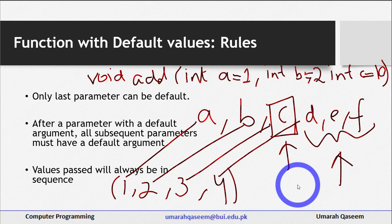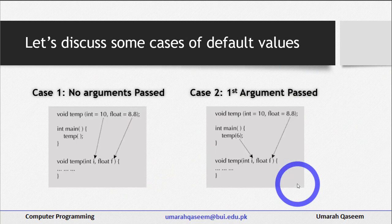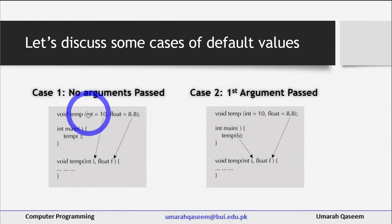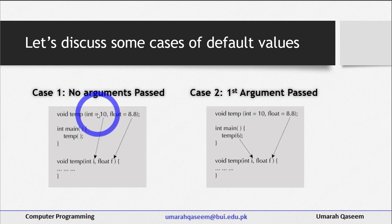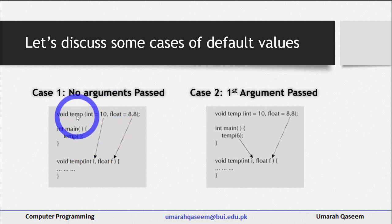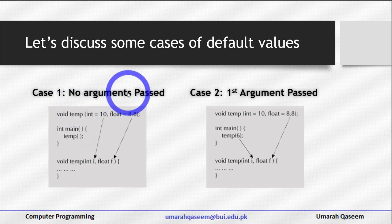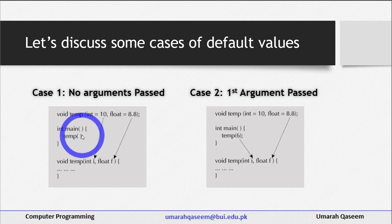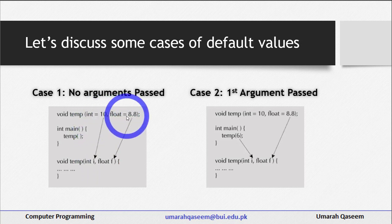Let's see some cases of default values. Case one: you have a function taking two arguments — an integer with a default value of 10, and a float with a default value of 8.8. If you call the function in main and no arguments are passed, the default values for both parameters will be used. Obviously, since we haven't passed anything, the default values will be used in this case.